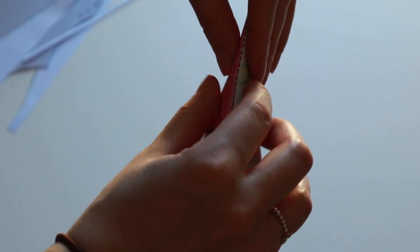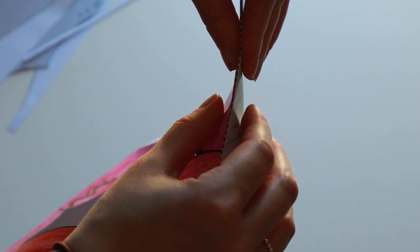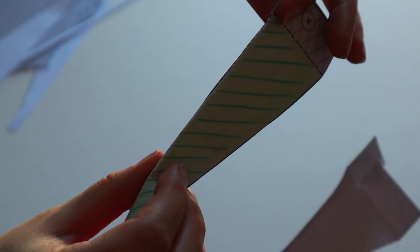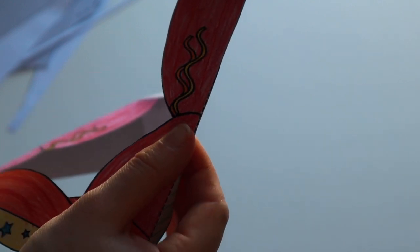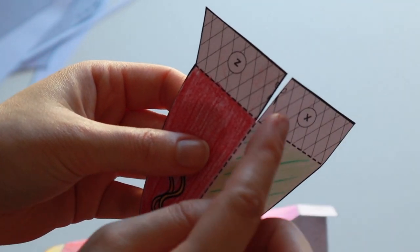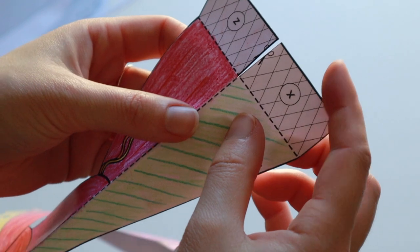Fold along the dashed line all the way from the top to the bottom. Do both sides. Now fold along the lines for your tabs.